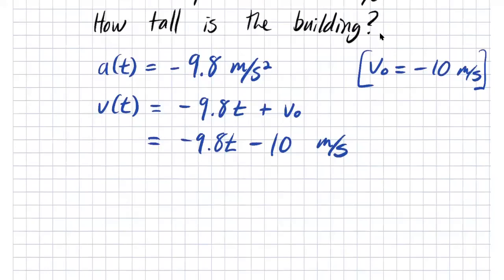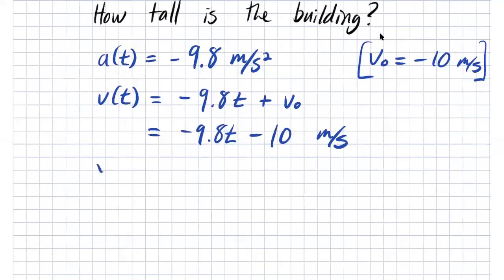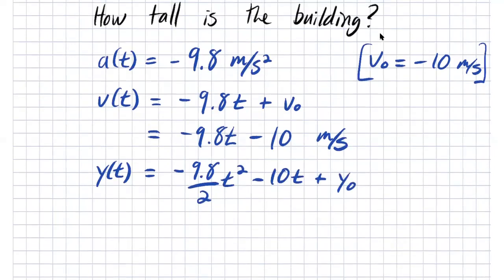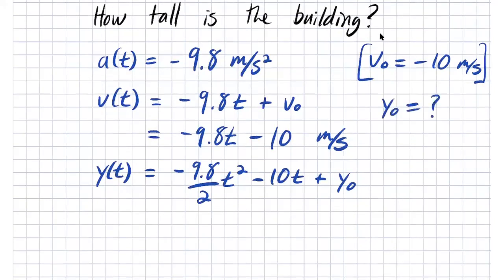For y of t: integrating v gives y of t equals minus 4.9 t squared minus 10 t plus y-naught. The question we're trying to answer is: what is y-naught? What was the height of the ball when it was at the roofline going minus 10 meters per second?